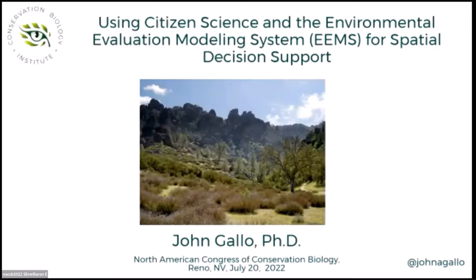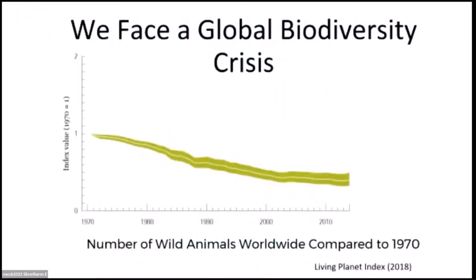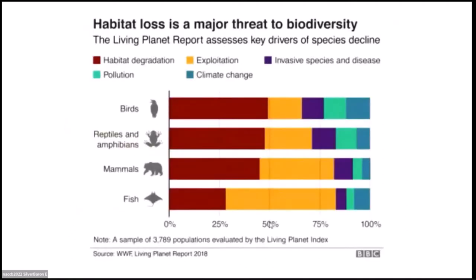We're going to be talking about how to use citizen science and integrate it with a decision support system known as the Environmental Evaluation Modeling System. Looking at the big picture, we're losing ground in our fight to conserve biodiversity — not only with rare species but also individuals. This is the Living Planet Index, and we've lost more than 50 percent of the individuals on the planet since 1970. One of the primary drivers of that is habitat degradation.